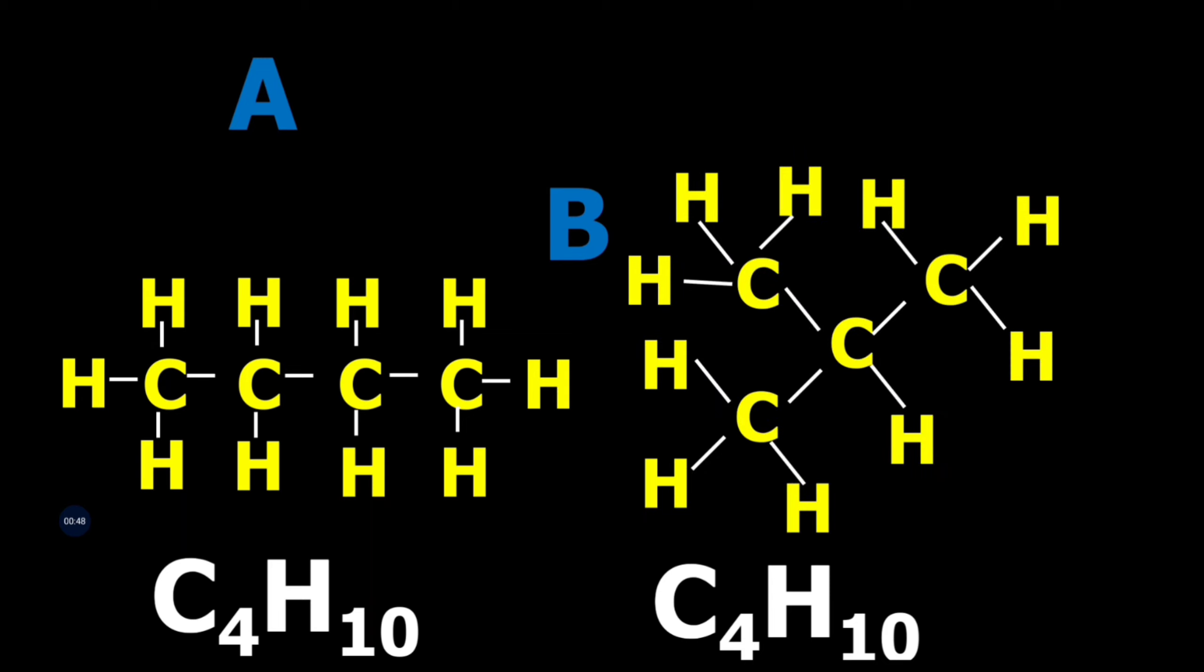These are isomers of each other. The structures are different. We call this kind of isomers chain isomers because the length of the chain in molecule A is different to the length of the chain in molecule B.